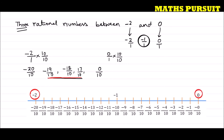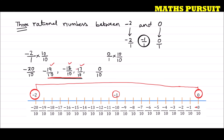We have 0 upon 10 for zero — since 0 has no sign — and minus 2 means minus 20 upon 10. At the center you can see minus 1, which is minus 10 upon 10. We need to find three rational numbers between minus 2 and 0, and there is a huge range available. We are considering minus 19 upon 10, minus 18 upon 10, and minus 17 upon 10 as our three rational numbers between minus 2 and 0.